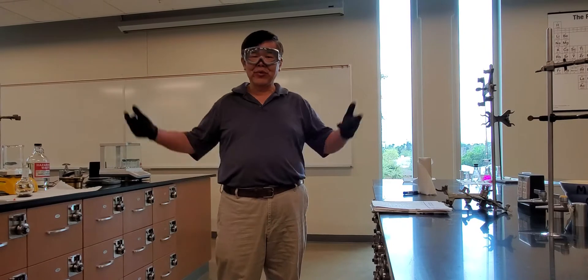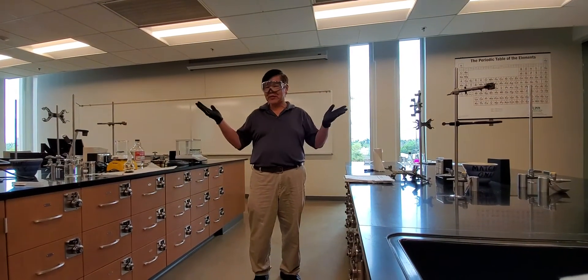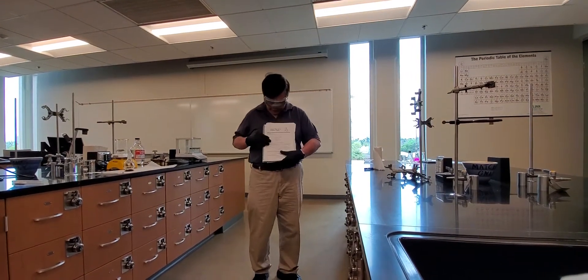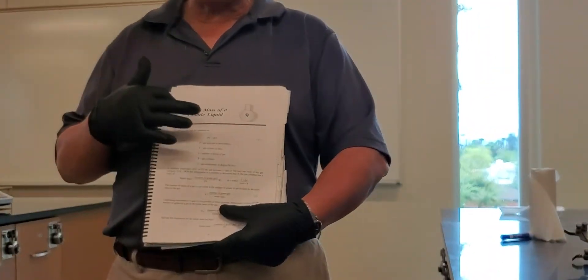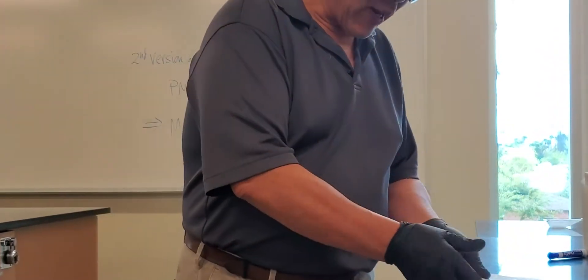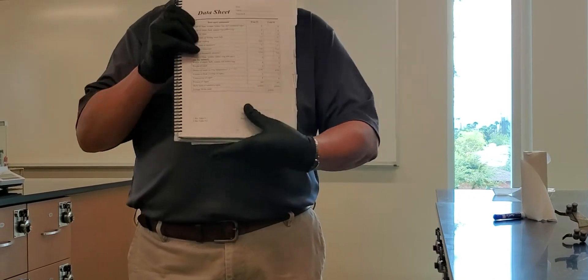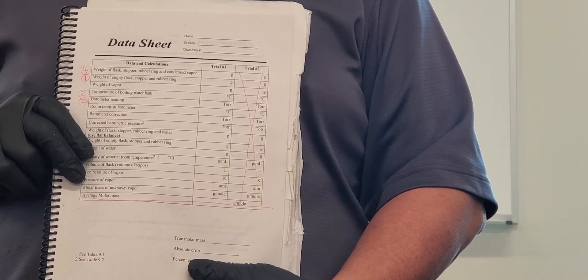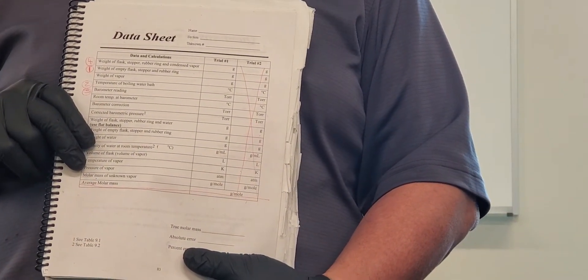Alright class, since you're not able to get in here, I'm going to show you guys how to do it properly. The lab we're doing today is called the molar mass of a volatile liquid. The data sheet is on page 83. Basically what we're trying to do is utilize the ideal gas law to determine the molar mass of a vapor that's trapped inside a vessel.